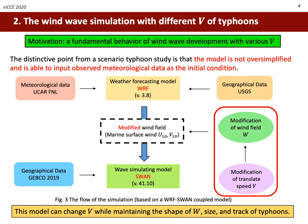The unique point of this study is summarized in the red-circled rectangular in the figure. Modification of transit speed and resulting wind field modification were adapted to the simulated wind field of WRF. This modified wind field would be the input of SWAN's simulation. The advantage of the modification is that V can be changed while maintaining other parameters such as the shape of wind field, the size, and the track of typhoons.